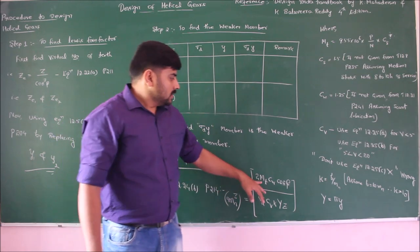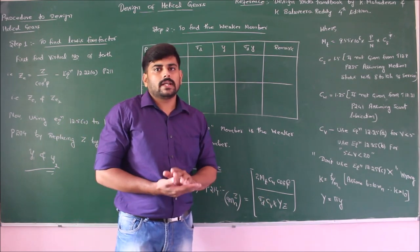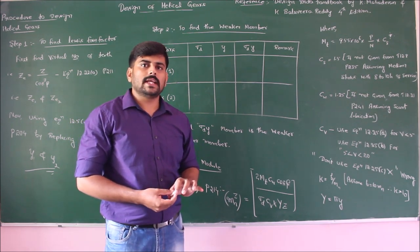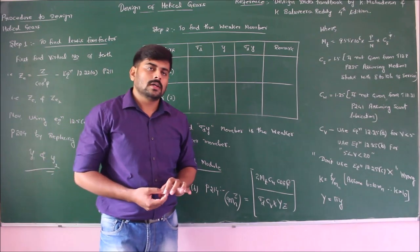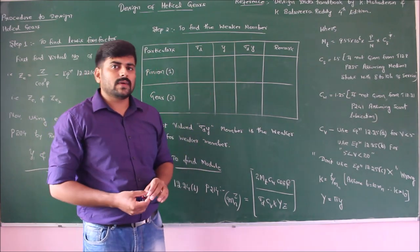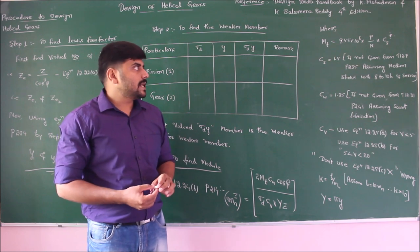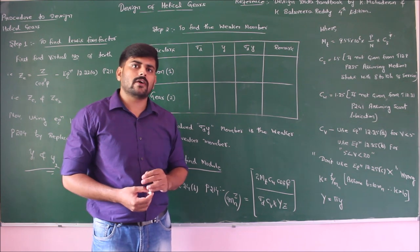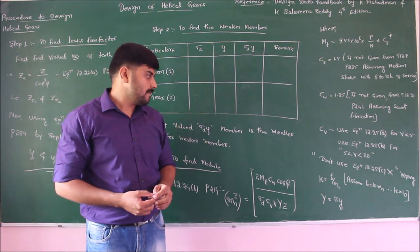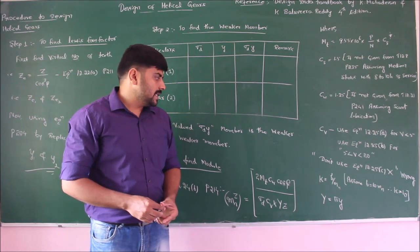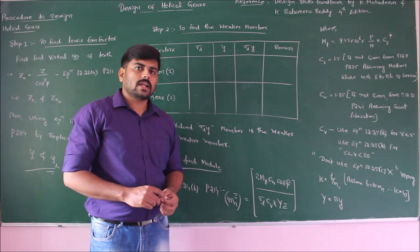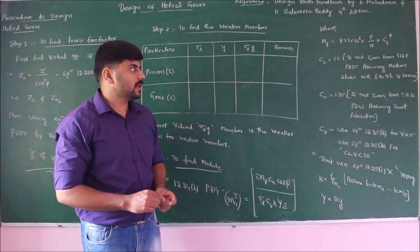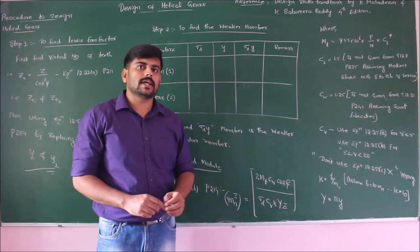Where MT is the torque, given by 9.55 × 10⁶ × P/N × service factor, where P is in kilowatts and N is in RPM. If the service factor Cs is not given, use table 1.8, page number 235, assuming medium shocks with 8 to 10 hours per day of working — take the value as 1.5. Cw is the wear lubrication factor; if not given, from table 12.21, page number 241, assuming scant lubrication, take the value as 1.25.